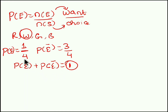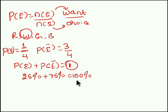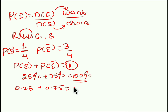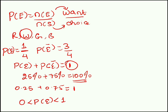Total probability is always equal to 100%. 1 by 4 can be written as 25% and 3 by 4 is 75%, so 25 plus 75 equals 100%. We also represent probability in decimal values: 1 by 4 is 0.25 and 3 by 4 is 0.75, and total probability will always equal 1. Probability always lies between 0 and 1, so if values go beyond 1 or fall below 0, your answer is wrong.